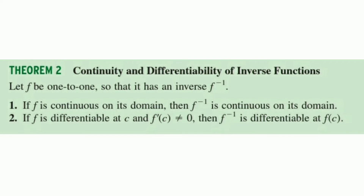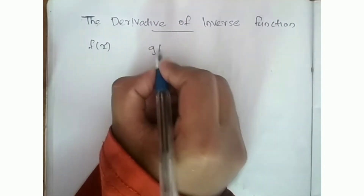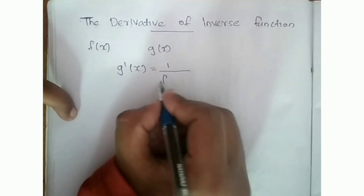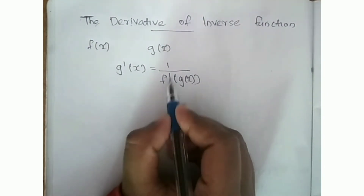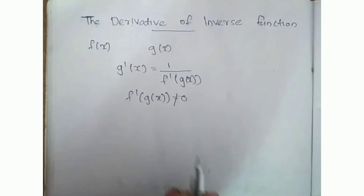Now, the derivative of inverse function theorem: if f is differentiable at c and f prime of c is not equal to 0, then f inverse is differentiable at c. The derivative of the inverse function: if g of x is the inverse of f of x, then g prime of x equals 1 by f prime of g of x. Note that f prime of g of x must not equal 0.